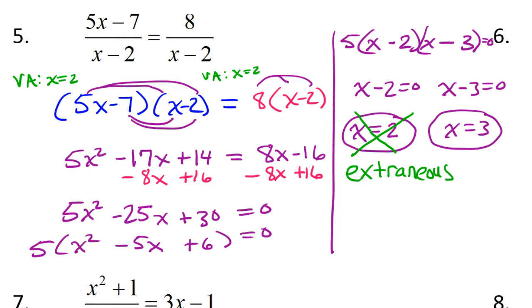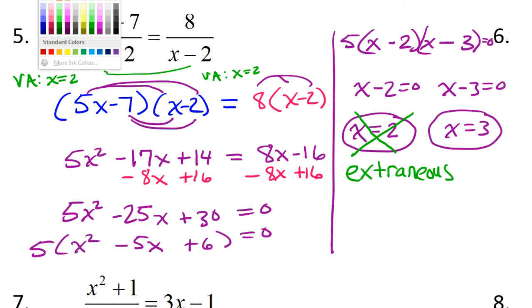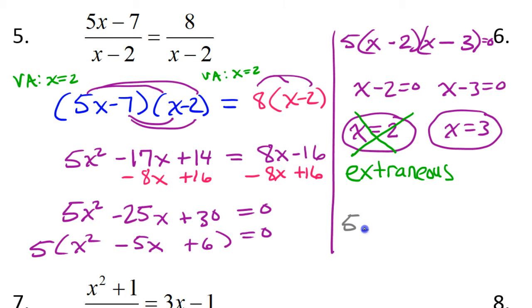So if this were a test or something like that, what would you put for your final answer? Say if this was problem number 5 and you're supposed to write your answer on the line, you would put x equals 3, and that's all. You would not put x equals 2. Now if I looked at your work, I would like to see that you circled it or crossed it out and wrote extraneous. So that was very interesting. Thank you so much.